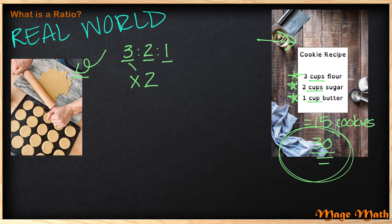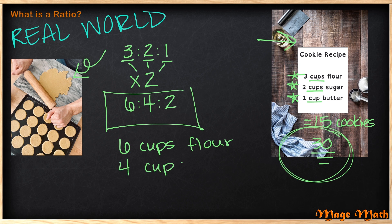So first we have three times two, six. Don't forget to bring down your colon for your ratio. Next we have two times two, four. Again, bring down your colon. And last we have one times two, two. Your new ratio to make cookies for 30 students is six to four to two, which means you'll need six cups flour, four cups sugar, and two cups of butter. We use ratios in the real world all the time. Next time you're out, look around and see if you can find some.